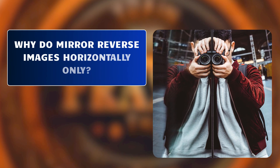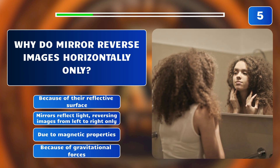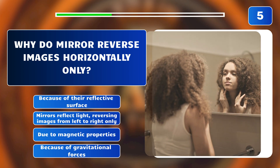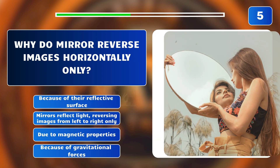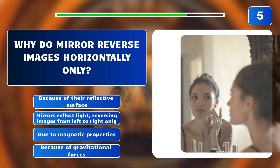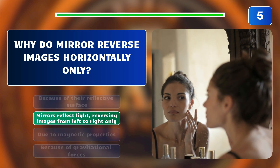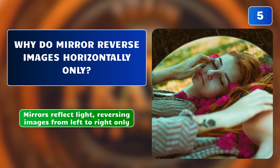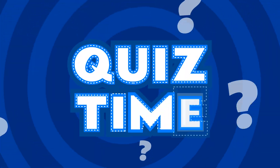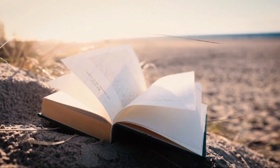Why do mirrors reverse images horizontally only? Is it because of their reflective surface, because mirrors reflect light reversing images from left to right only, due to magnetic properties, or because of gravitational forces? The answer is: mirrors reflect light, reversing images from left to right only.